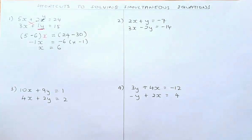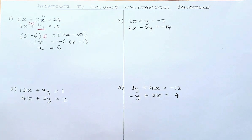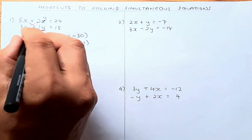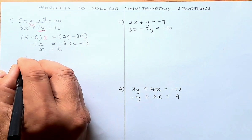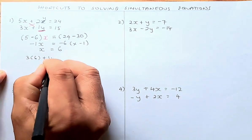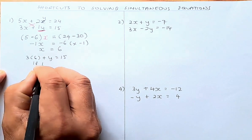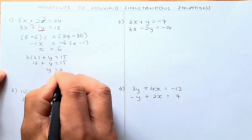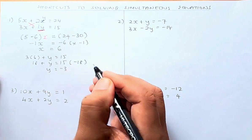Once you've found x, you must find your y. You're going to substitute your x into either one of the equations. I suggest you substitute it into the second equation because it's easier. So 3 times 6 plus y is equal to 15. So 18 plus y is equal to 15. Y is equal to negative 3 because you minus 18 on both sides.